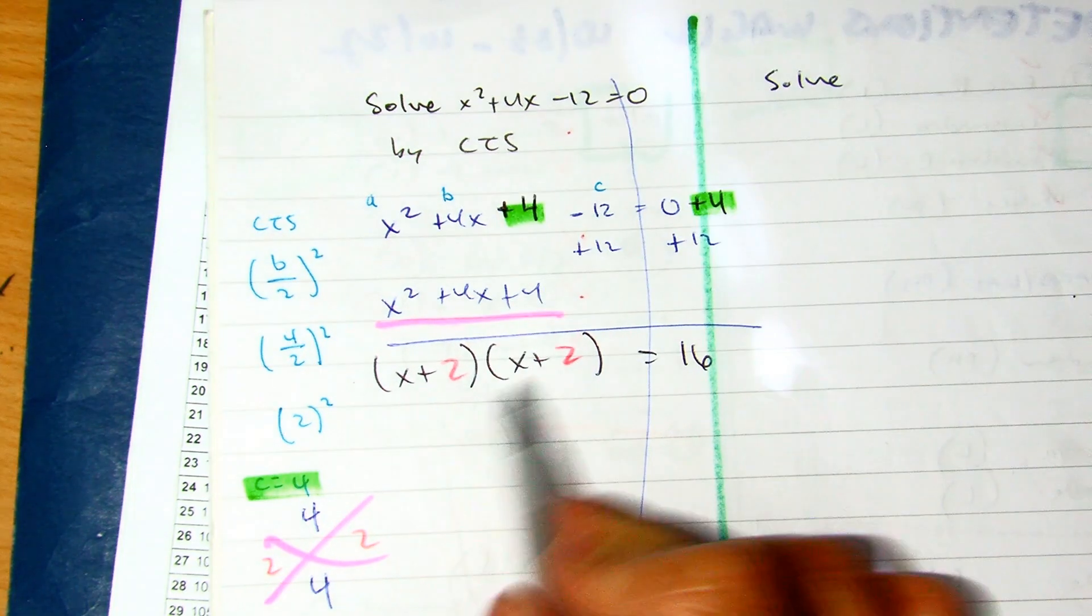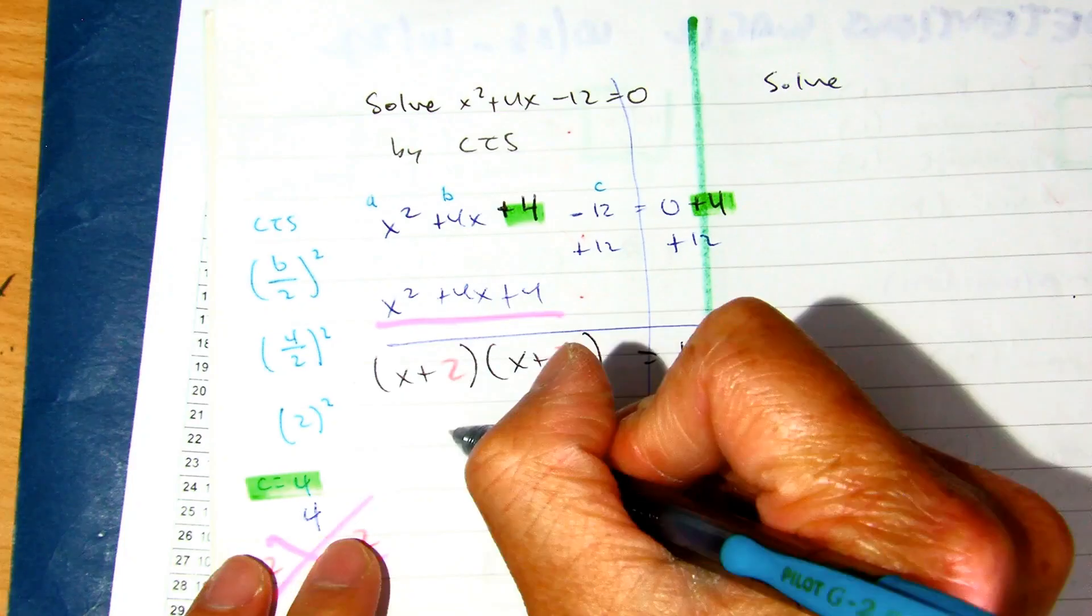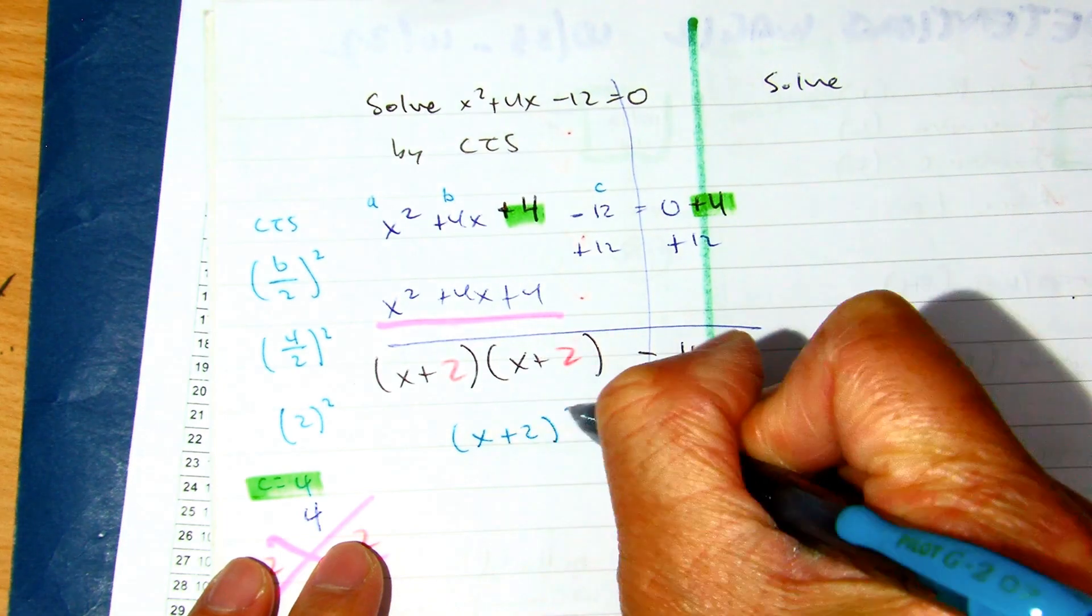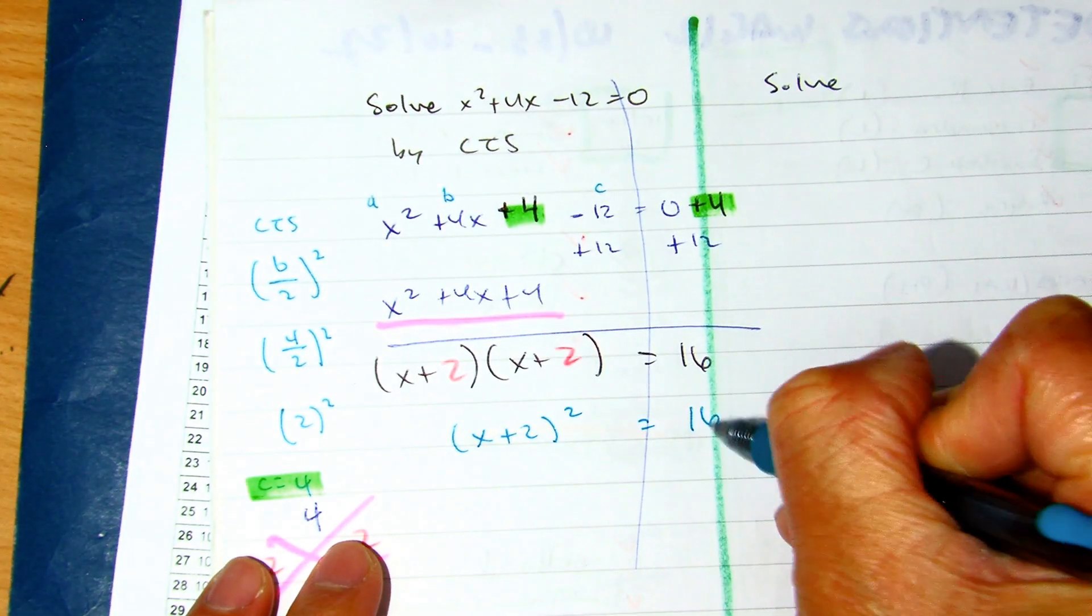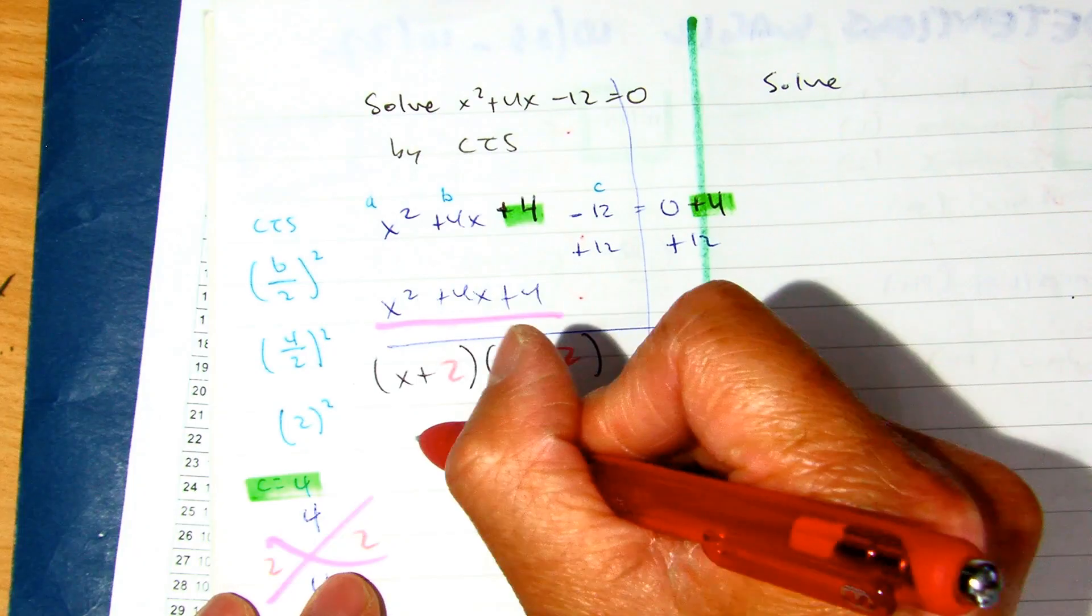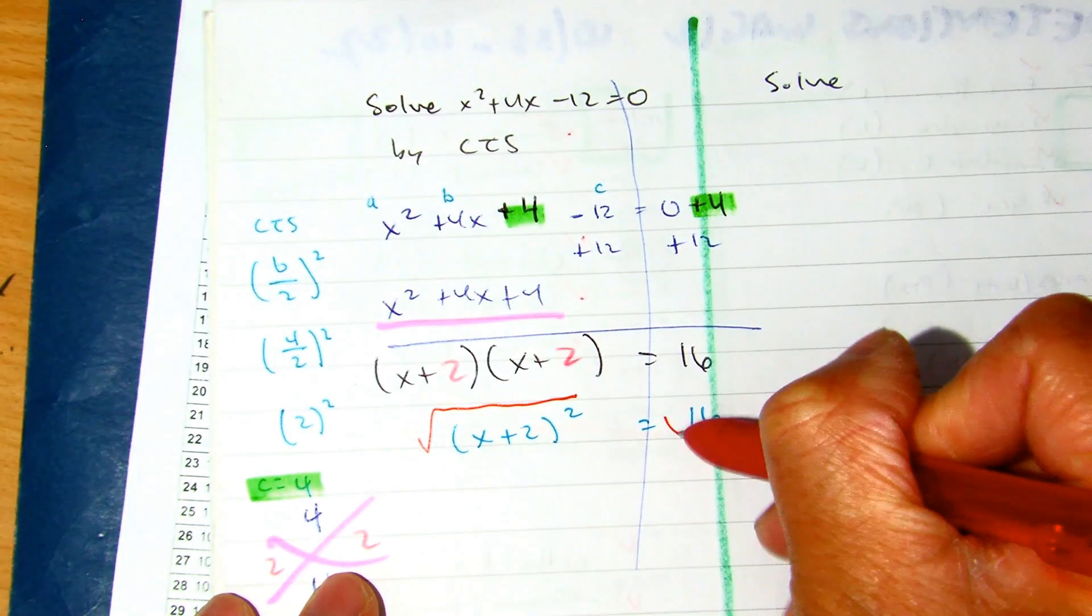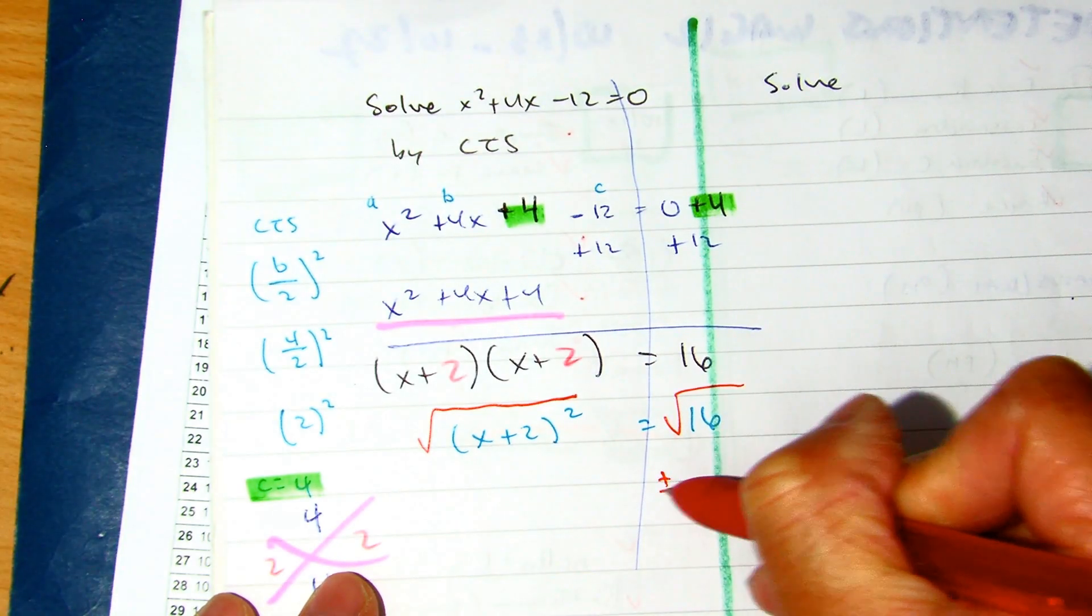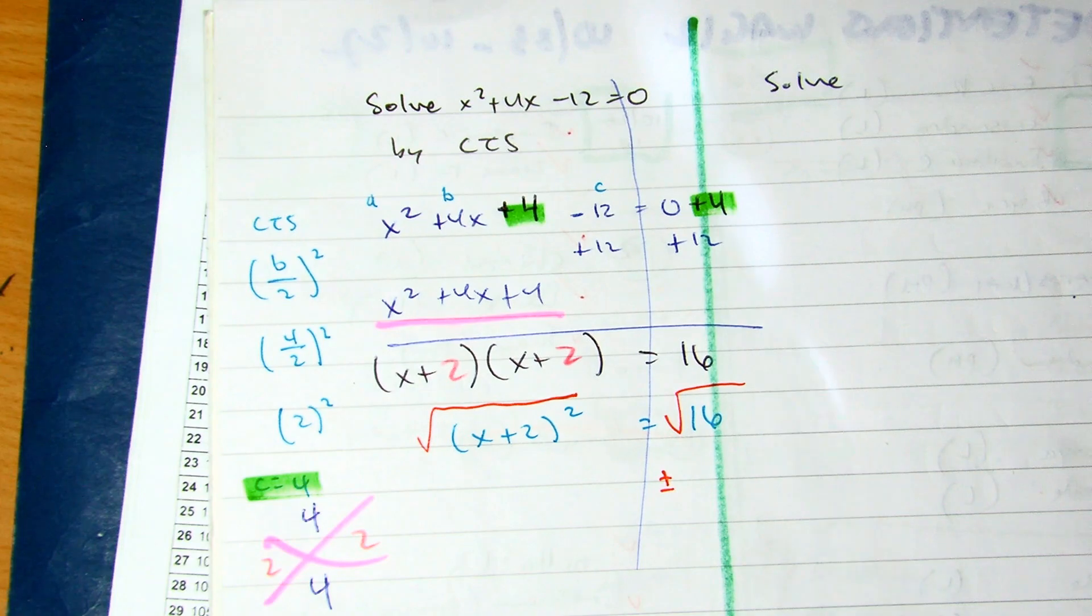So this is going to become (x + 2)(x + 2) = 16. You have two of these, you can put them together. (x + 2)² = 16. Partner A, tell partner B how to get rid of power 2. Not only do you need the square root...